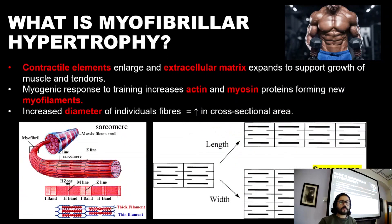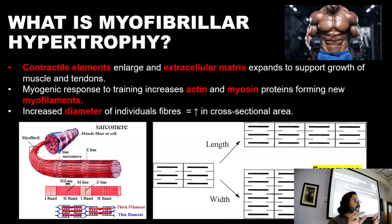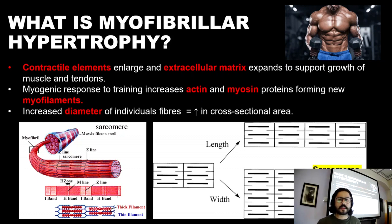So then we think about what myofibrillar hypertrophy is. In its most straightforward definition, it's when the myofibrillar part of the muscle — the part that contains the actin and myosin, commonly referred to as the sarcomere — actually becomes larger. They increase in size and they increase in number as well.